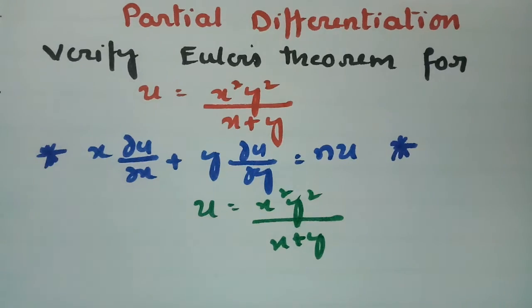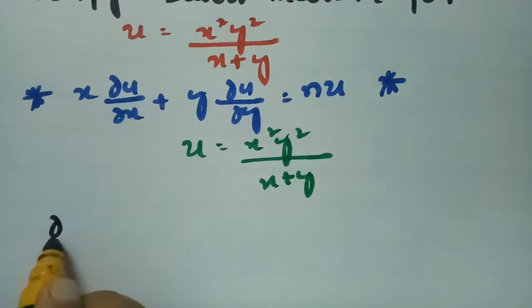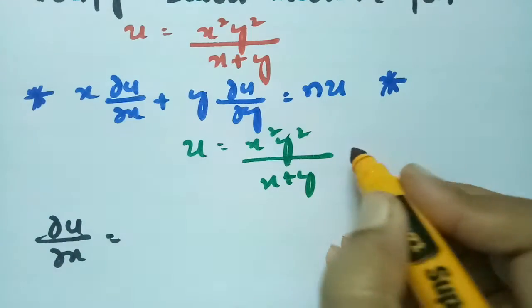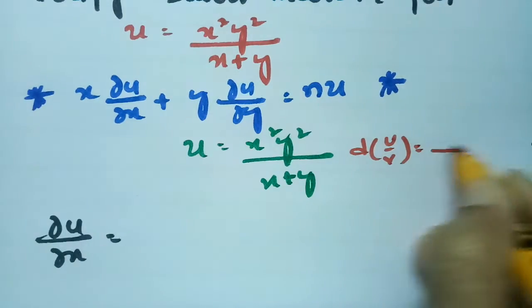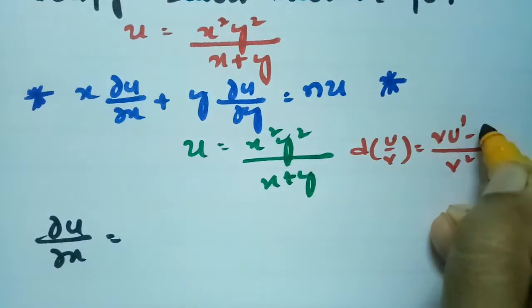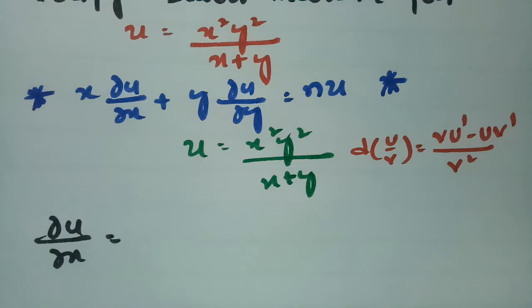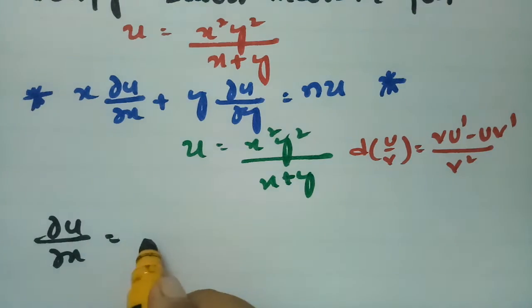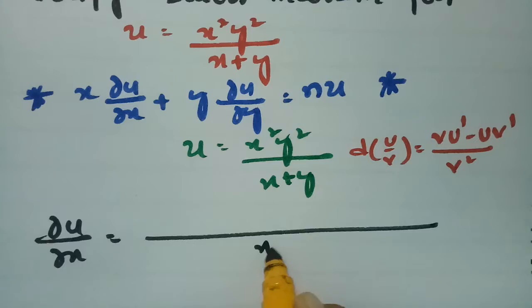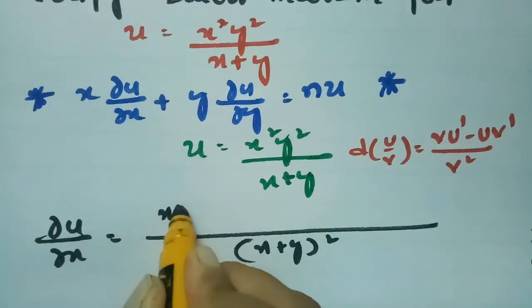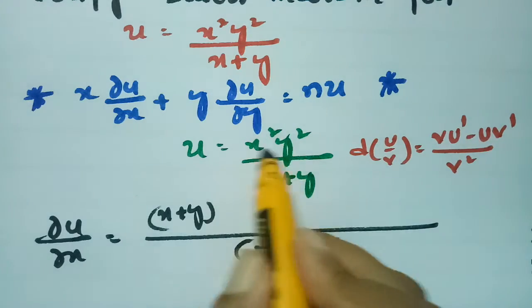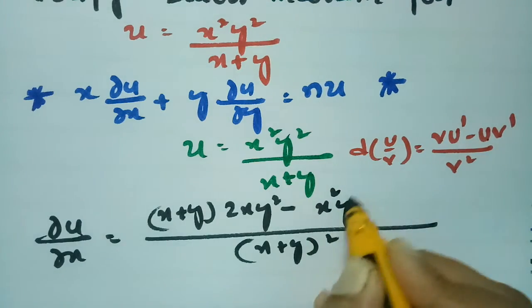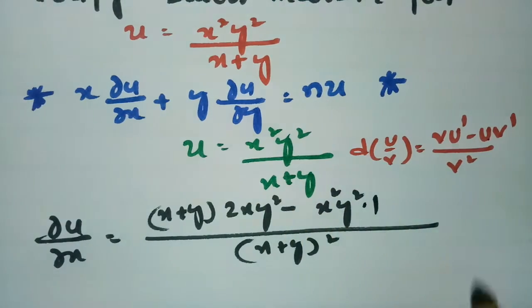Now I will make a derivative with respect to x. ∂u/∂x — as you know, the derivative of u by v is v squared times u-dash minus u into v-dash. See here the numerator is u and the denominator is v. So v squared is (x+y) whole square, and u-dash — the derivative with respect to x — is 2xy square.